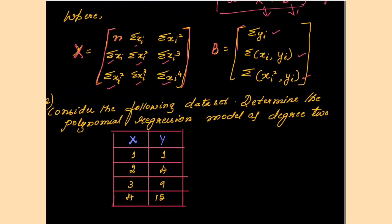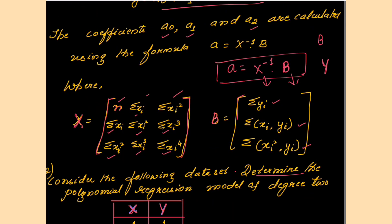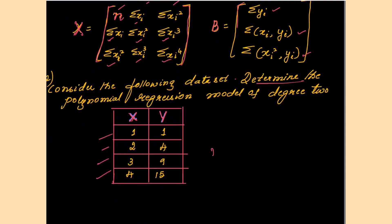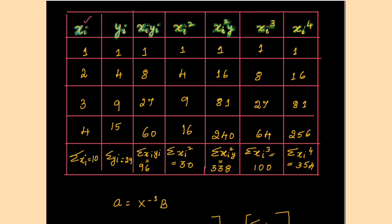Consider the following data set with four data points. x values are given as 1, 2, 3, 4 and y values as 1, 4, 9, 15. To substitute into the matrices, we need to compute summation of xᵢ, xᵢ², xᵢ³, xᵢ⁴, and n (the number of data points, which is 4). Let us compute and keep these ready in tabular form.